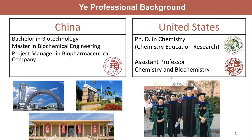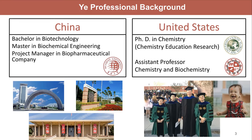Luckily that year, a couple of new faculty joined the department who were doing chemistry education research, and I joined one of those research groups. That took about three years. My husband and I graduated together the same year in the same department — along with our daughter, who graduated with us when she was two years old. After receiving my PhD, I came to CSUN as an assistant professor in the Department of Chemistry and Biochemistry.